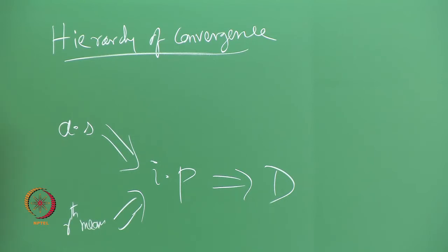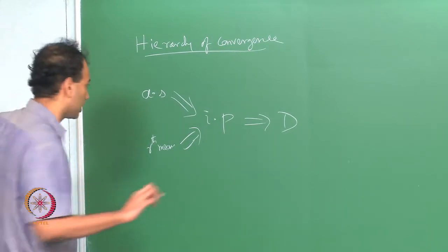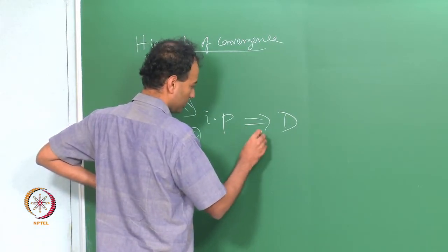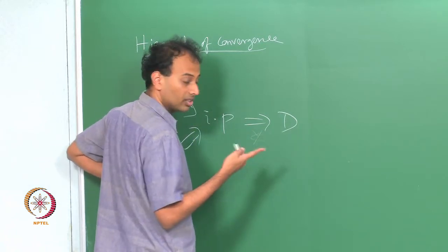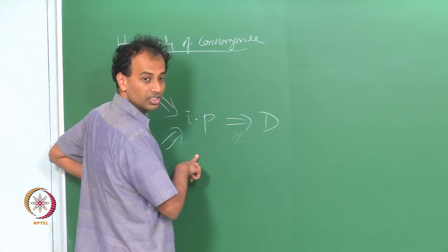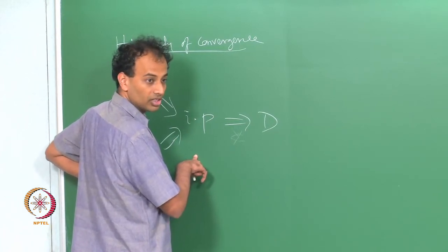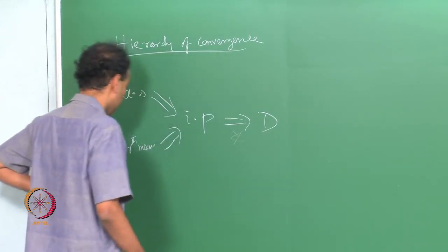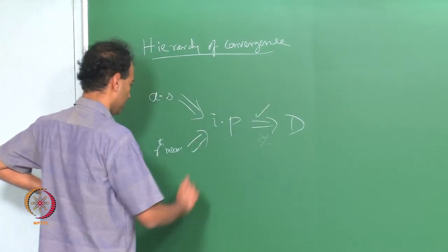Generally, none of the opposite implications are true — none of the reverse arrows hold in general. However, there is an exception: the reverse arrow from convergence in distribution to convergence in probability does not hold generally, but if the limit is a constant, then convergence in distribution implies convergence in probability. So if the limit is a constant x, these two notions are equivalent. We are done with that part.